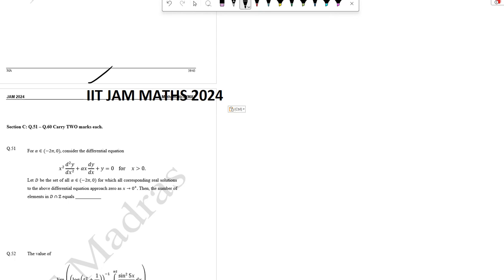Dear students, I am solving IIT JAM paper, question number 51. The differential equation is given for alpha from minus 2π to 0. We need to find all corresponding real solutions of the differential equation and the number of elements in the intersection z. So we can check for minus 2π to 0, what values are possible.